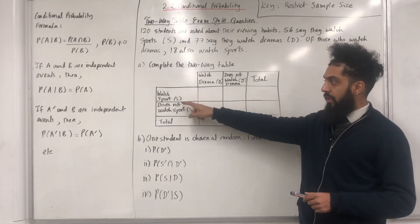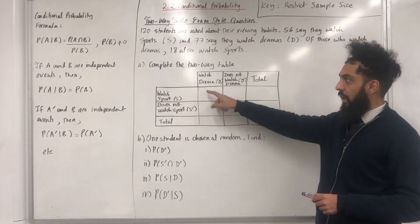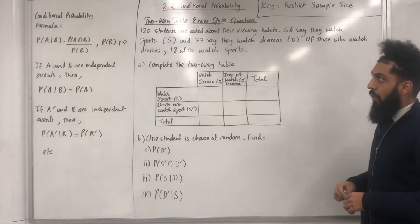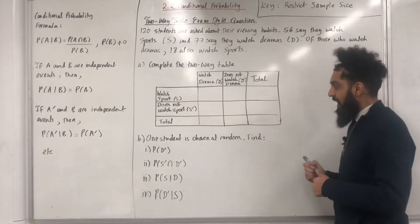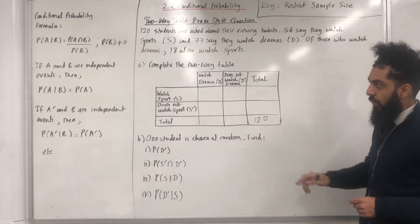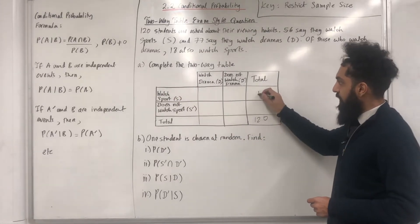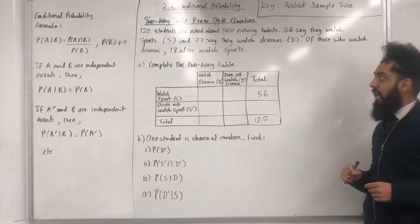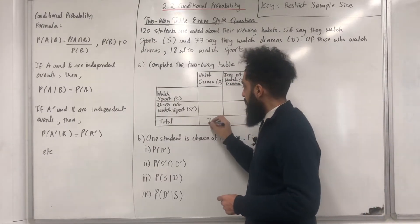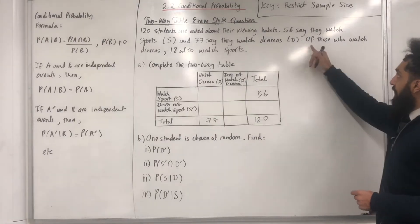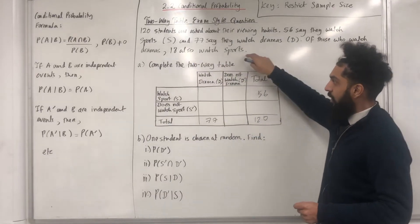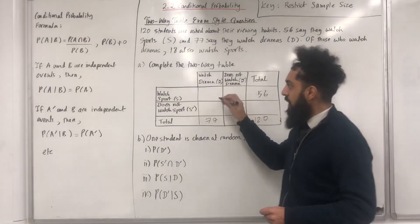We have: watch sport, does not watch sport (S, S dash), watch drama, does not watch drama (D, D dash), and the total. There are 120 students in total. Fifty-six watch sport, so the total for watch sport is 56. Seventy-seven watch drama, so the total for watch drama is 77. Of those who watch dramas, 18 also watch sports — so 18 goes in the watch sport and watch drama cell.